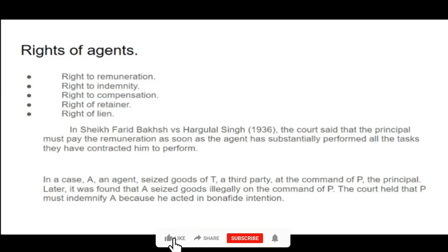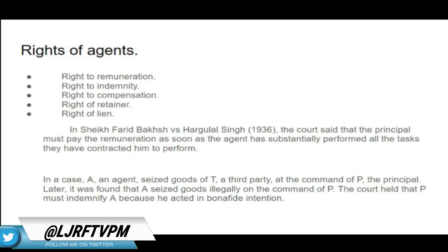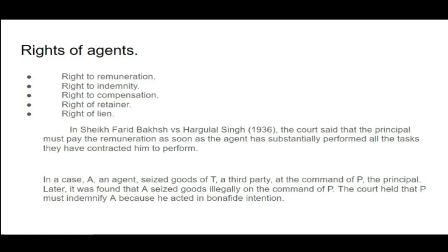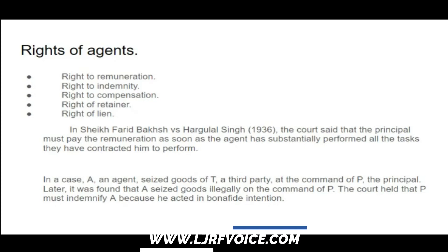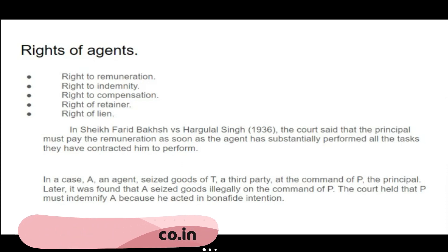Section 225 — right to claim compensation. The section title is: 'Compensation to agent for injury caused by principal's negligence.' The principal must make compensation to his agent in respect of injury caused to such agent by the principal's neglect or want of skill. The principal must have taken care to protect his agent; if he didn't and the agent suffers injury as a result — injury to his body, reputation, or any other kind — the principal must compensate.